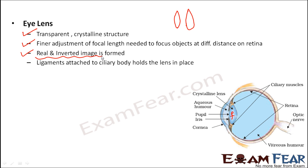The lens produces a real and inverted image, but we do not see a real and inverted image because the brain also plays a role. The image initially formed on the retina is real and inverted. The lens is held in place by ligaments attached to the ciliary body.